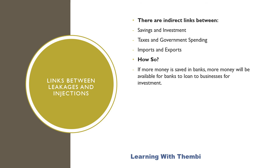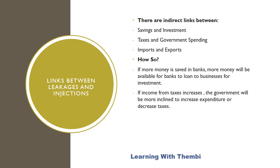There is no guarantee that the amount of savings in the economy will be equal to the amount of investment. When it comes to taxes and government spending, if income from taxes increases, the government will be inclined to increase their expenditure or to decrease taxes. But still, there is no guarantee that the amount of taxes will be equal to government spending. The government may spend a different amount from the income it receives from taxes — it might budget for a surplus or a deficit.